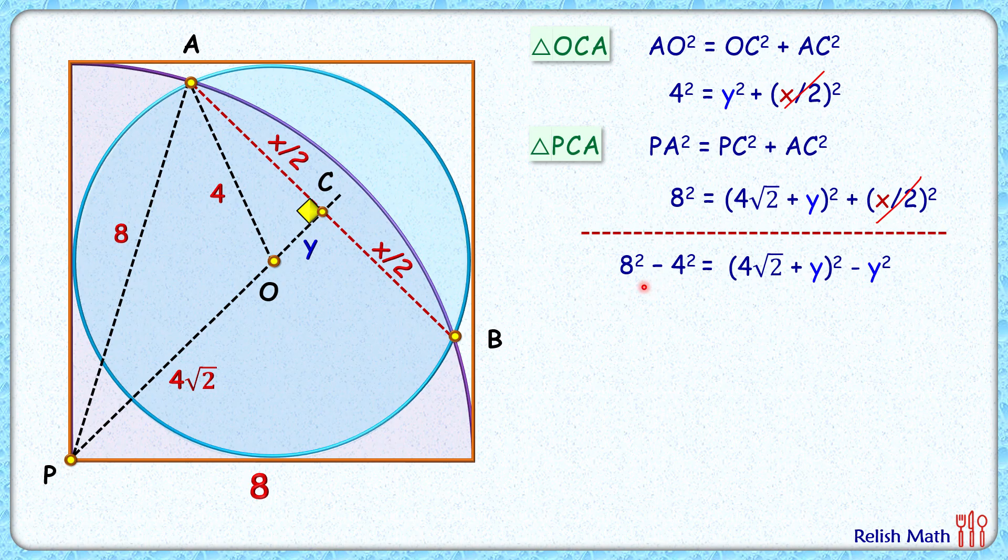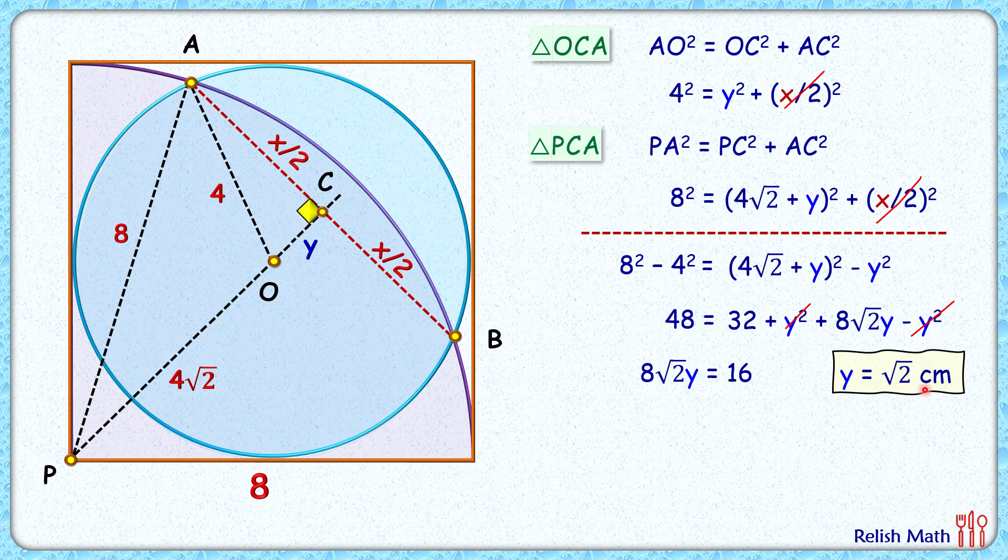Simplifying, LHS will be 64 - 16 that's 48. RHS, let's open the brackets, we will get 32 + Y² + 8√2Y minus Y². So RHS Y² and Y² will get cancelled down and we'll get 8√2 times Y equals 16. Y will be 16 by 8√2 or √2 centimeter.